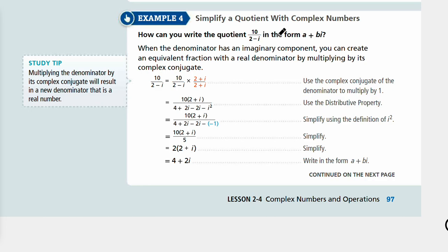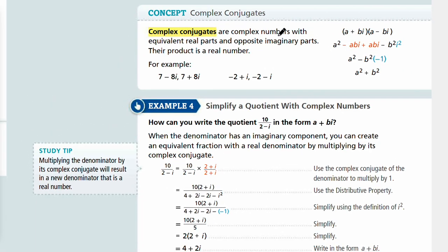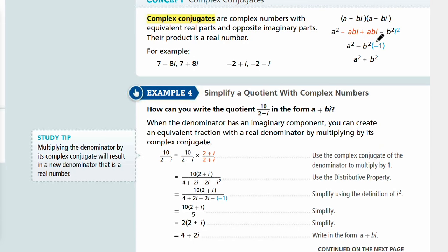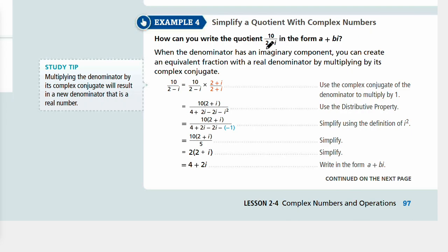The denominator has an imaginary component, so we're going to multiply by the conjugate. By definition, what is a conjugate? They're complex numbers with equivalent real parts, so a is the same, but the signs are different. The complex conjugate for 2 minus i would be 2 plus i.